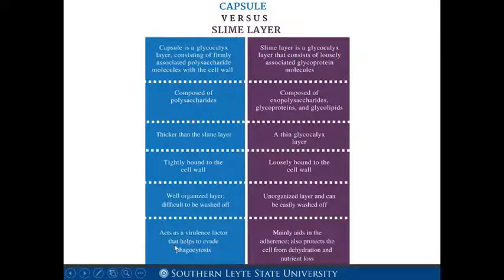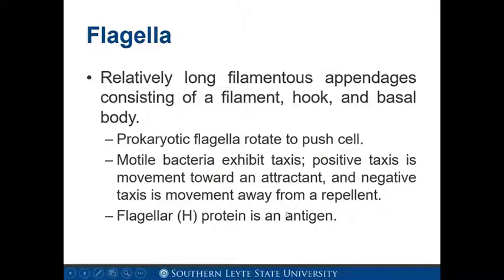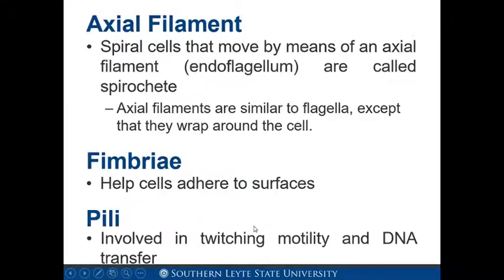The capsule is a well-organized layer difficult to wash off, and acts as a virulence factor that helps evade phagocytosis. The slime layer is unorganized, can be easily washed off, and mainly aids in adherence and protects the cell from dehydration and nutrient loss. Flagella are relatively long filamentous appendages consisting of a filament, hook, and basal body. Prokaryotic flagella rotate to push a cell. Motile bacteria exhibit taxis — positive taxis is movement toward an attractant, negative taxis is movement away from a repellent. The flagellar symbol H protein is an antigen.